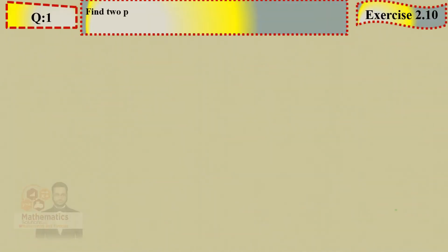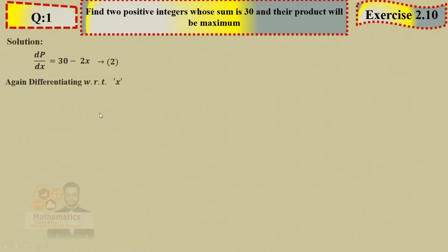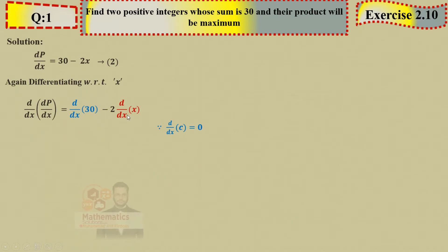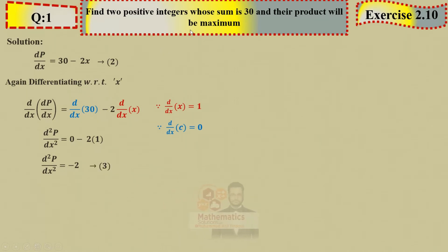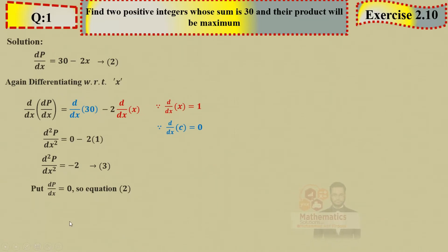Now differentiate again for the second derivative. d²P/dx²: derivative of 30 (constant alone) = 0; derivative of 2x gives 2. So second derivative = −2. Now we need the value of x: set the first derivative equal to zero. First derivative 30 − 2x = 0.